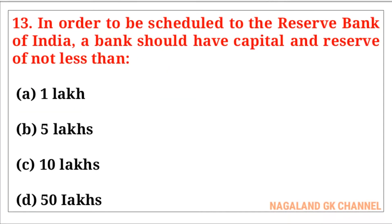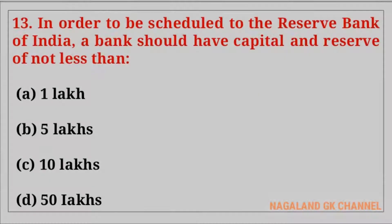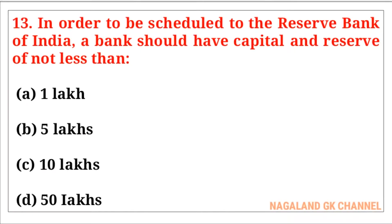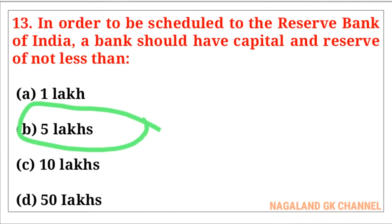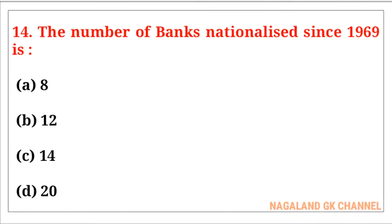Question number thirteen: In order to be eligible for the Reserve Bank of India, a bank should have a capital and reserve of not less than — the correct answer is option number B, not less than five lakhs. Question number fourteen: The number of banks nationalized since 1969 is — the correct answer is option number D, that is 20.